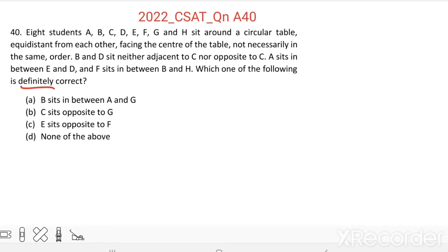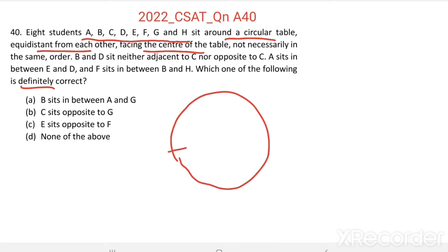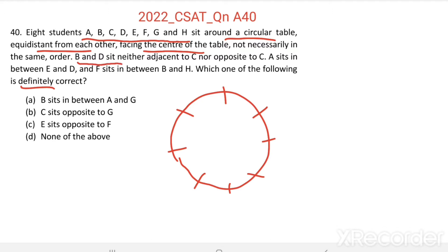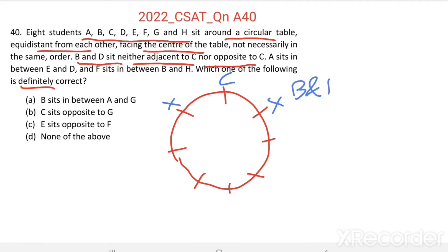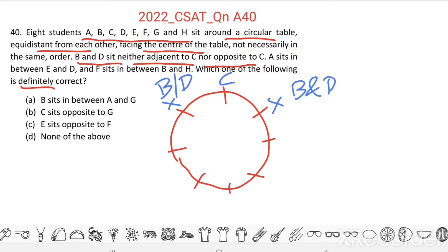There are eight students A, B, C, D, E, F, G and H sitting around a circular table, equidistant from each other facing the centre of the table. Suppose this is the table — they are sitting equidistant from each other. Now, B and D sit neither adjacent to C nor opposite to C. Suppose C is sitting here, then these are the adjacent seats of C. B and D are not sitting here and they are not sitting opposite to C either.